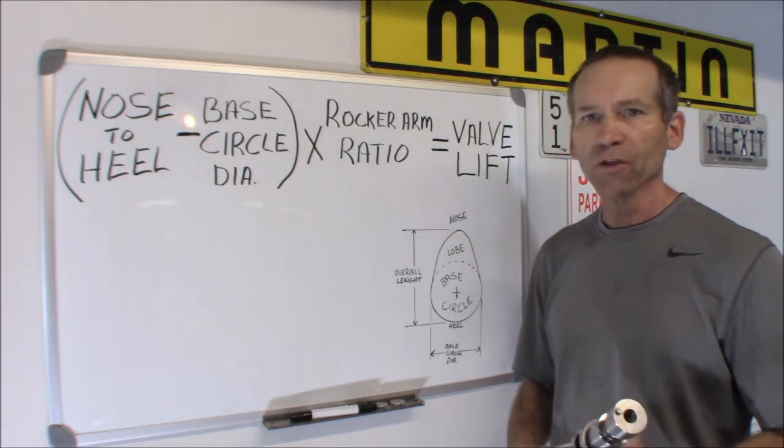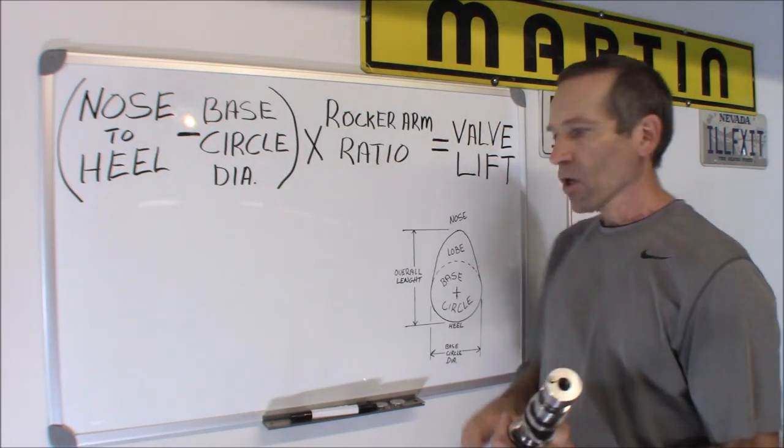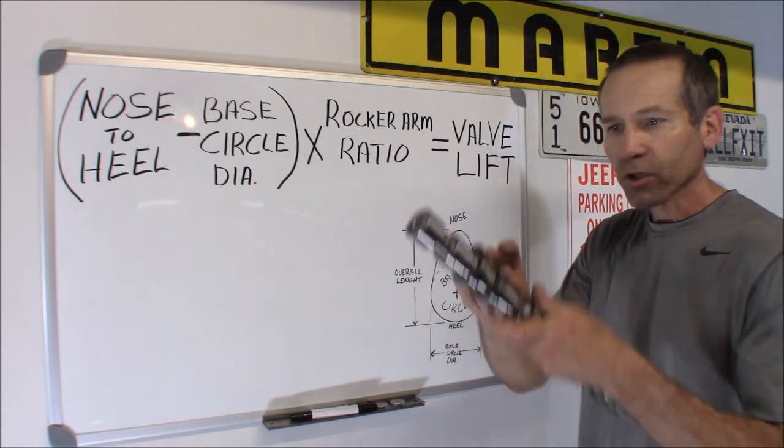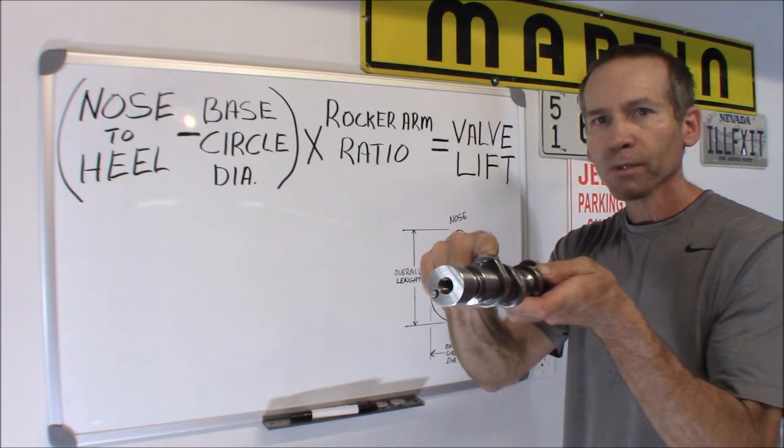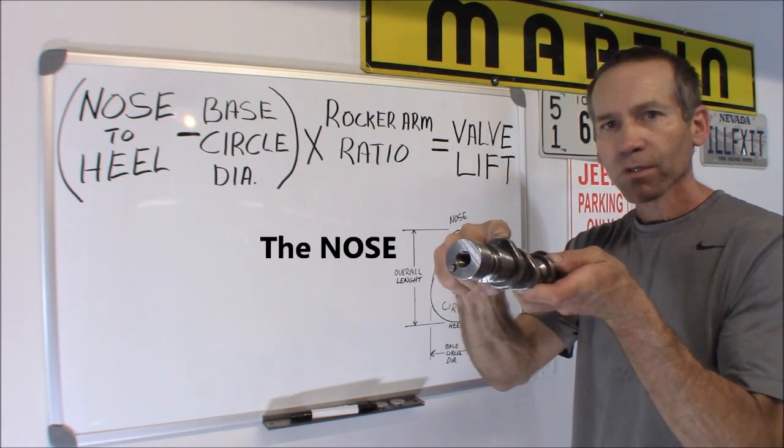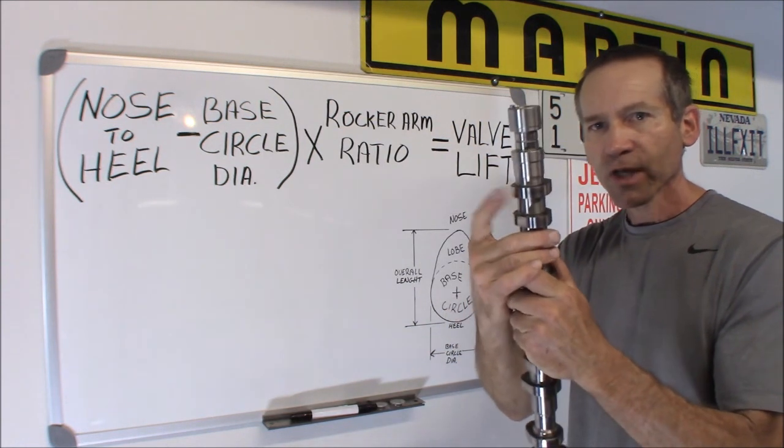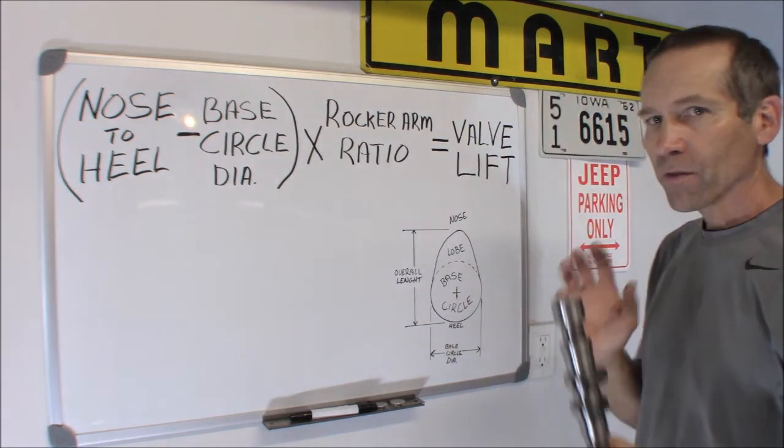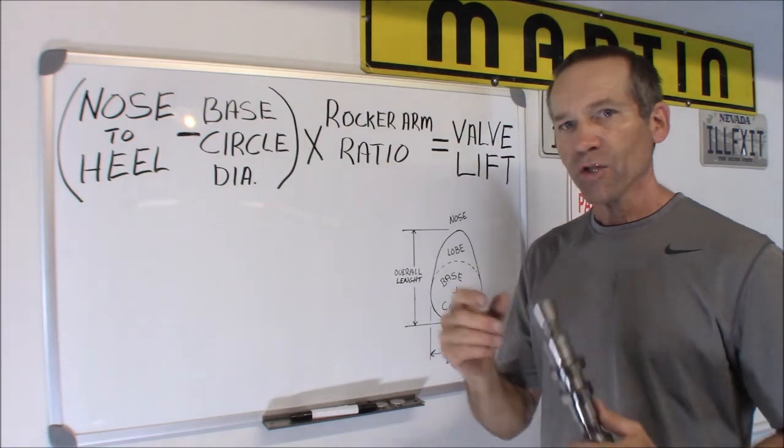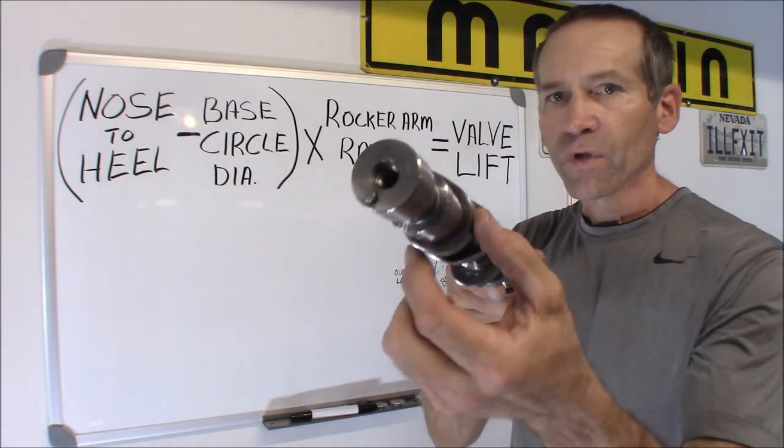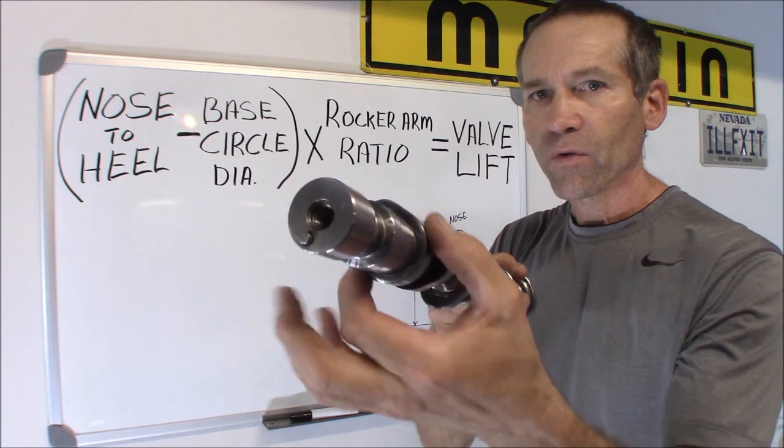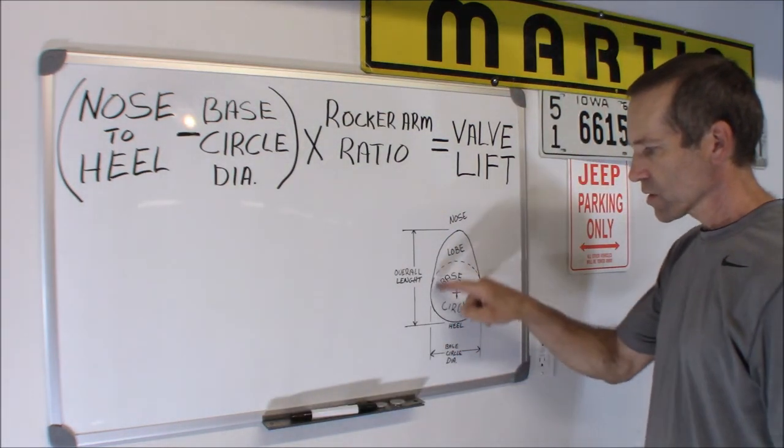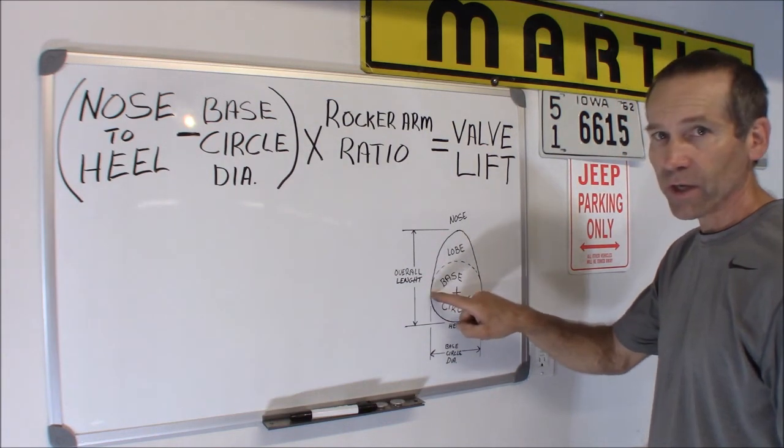Okay, it's a very easy mathematical thing to figure out. All you have to do is know the measurement from the top of the lobe of the cam to the heel side, which is the bottom side of the cam lobe. After you have that measurement, then you need the base circle, which is this part right in here. This would be this measurement from this side to the side right here.